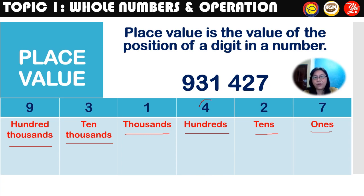So what is the place value of 4? The place value of 4 is hundreds — not 'four hundreds', just 'hundreds'. What is the place value of digit 3? The place value of digit 3 is ten thousands.